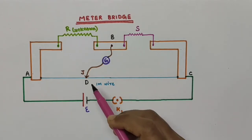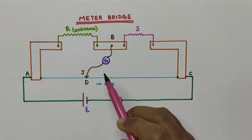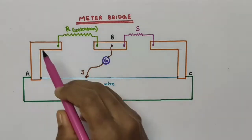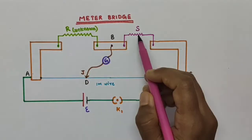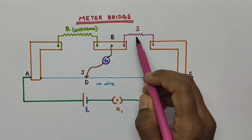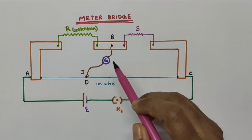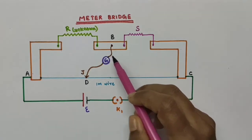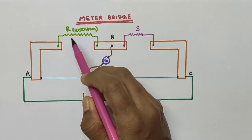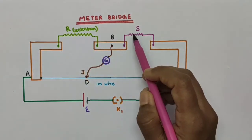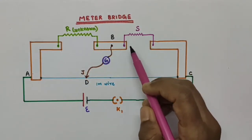The resistors are connected in the two gaps of the metallic strips. These are the metallic strips. So here we have two resistors connected in the two gaps of these metallic strips. Here we have connected one resistor which is an unknown resistor — this is of unknown resistance — and here we have a shunt resistance. Small resistance S is here.